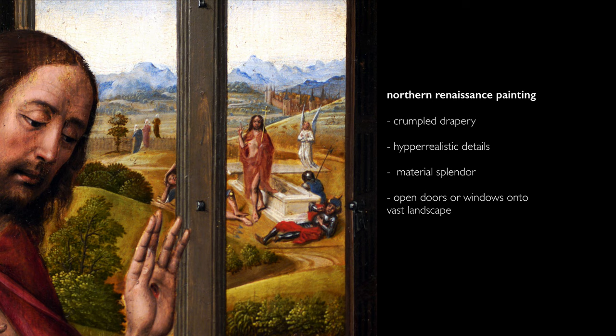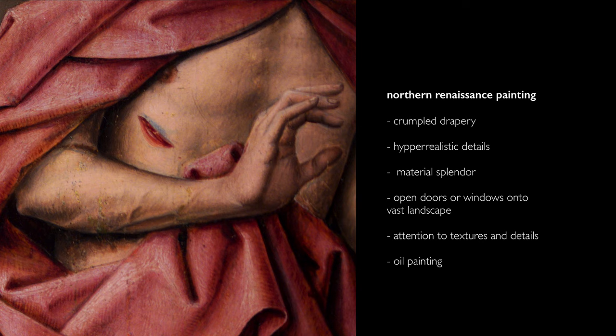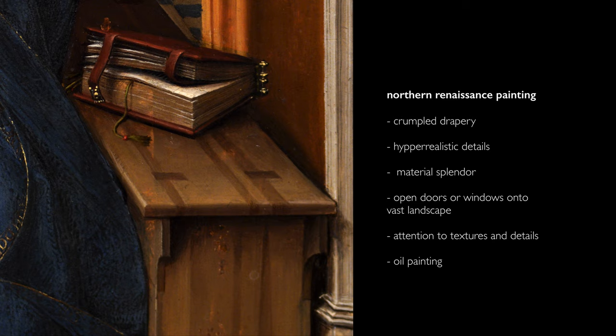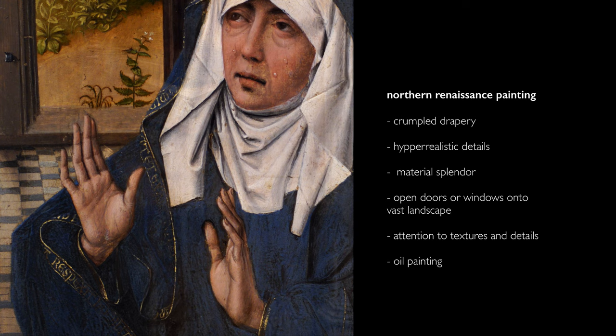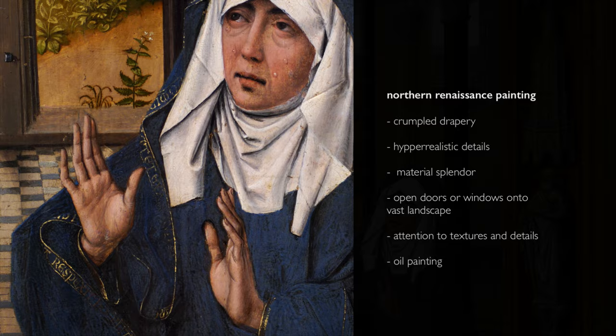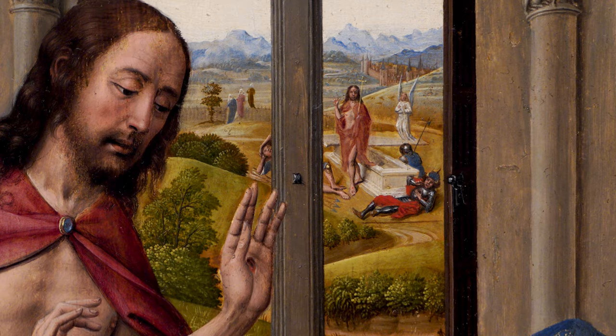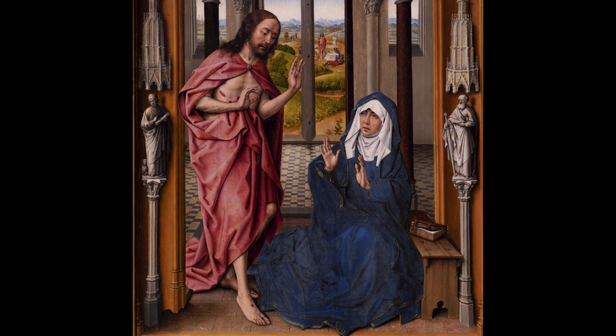We also have doors and windows that are open, leading us into a vast expanse of terrain in the background. The textures of things that only oil paint could capture — the wood on the bench that Mary is sitting beside, the gold clasp of the book, the Bible she's reading, the gold embroidery along the hem of her garment. This attention to tiny details, even as we move back into space, this desire to hold on to those details and give us as much information as possible.